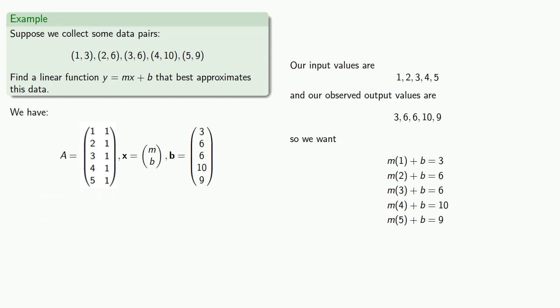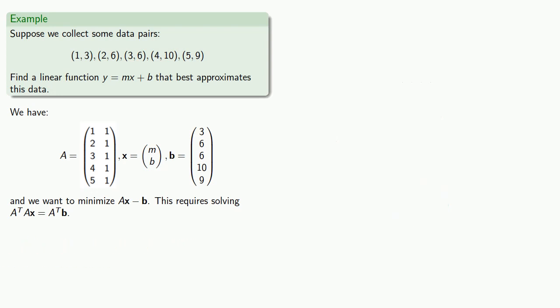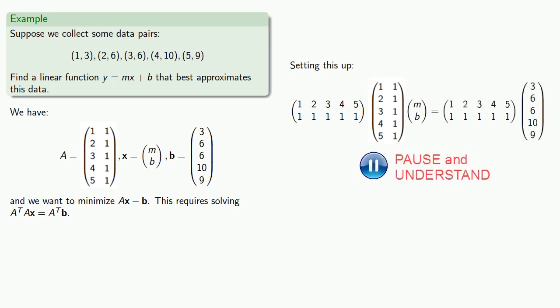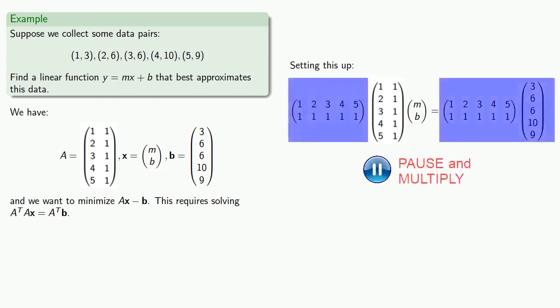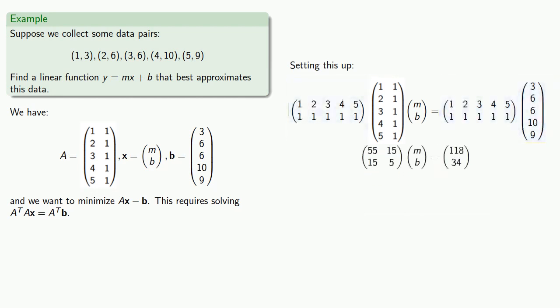And our goal is to minimize Ax minus b, and this requires solving A transpose Ax equals A transpose b. So setting this up, we want A transpose Ax to be A transpose b. And cleaning up all those matrix calculations. And now this is a beautiful system of two equations in two unknowns. And so reducing the corresponding augmented coefficient matrix gives us...